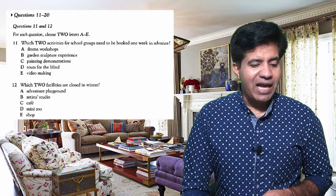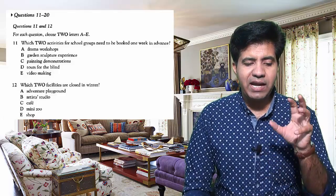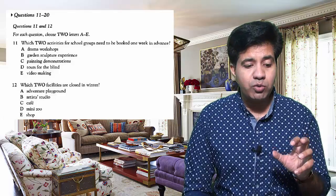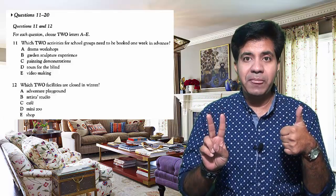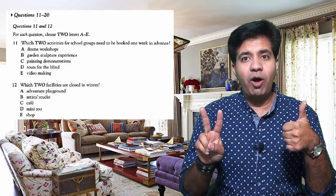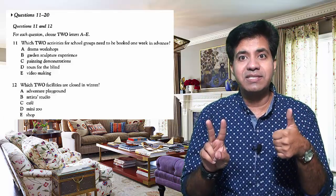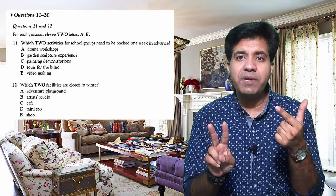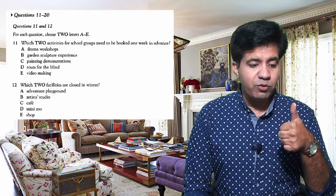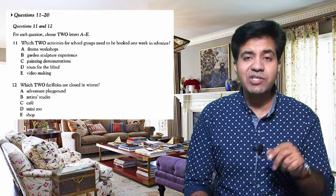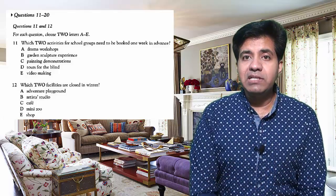Previously it was multiple choice with multiple options, but now it's multiple choice with multiple answers. Take a look — this is the question type. You've got the question 'which two activities for school groups?' and options A, B, C, D, E. You've got to choose two options to answer one question. Question 11 requires two options and is equal to one mark. So question 11 gives one mark, question 12 gives one mark.